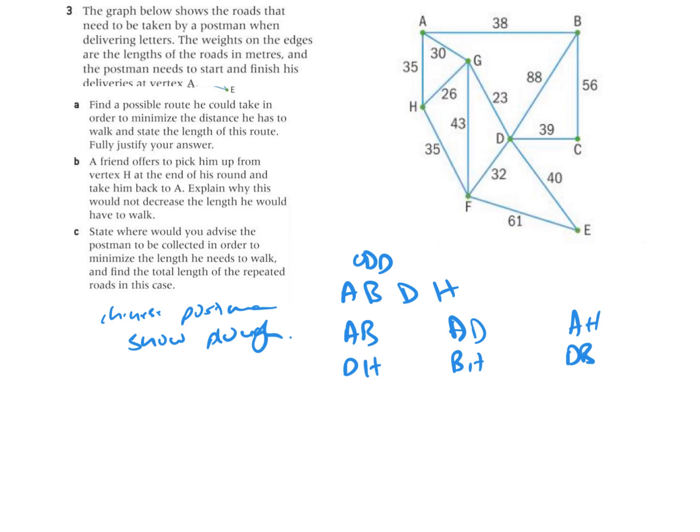AB, it's clearly 38. DH is going to be 26 plus 23, that's going to be the shortest way. If I add those up I can see that AB is 38, DH is 49. When I add 26 and 39.